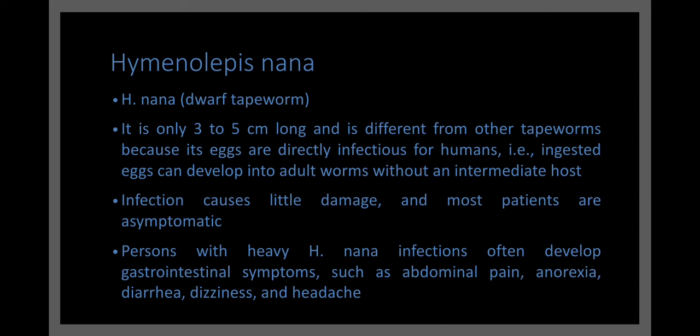H. nana, Hymenolepis nana, D. latum, Taenia saginata, and Echinococcus granulosus — these are the cestodes. H. nana is different from other cestodes because it does not involve an intermediate host for the completion of its life cycle, while it is transmitted from an infected human host to another uninfected human host.